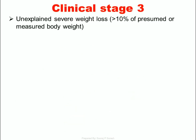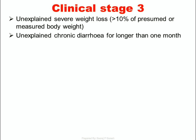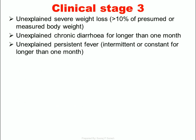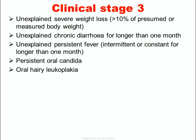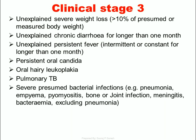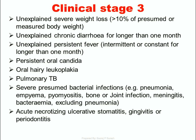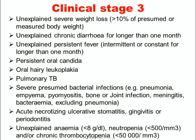Clinical Stage 3: Unexplained severe weight loss (greater than 10% of body weight), unexplained chronic diarrhea for longer than one month, unexplained persistent fever (intermittent or constant) for longer than one month, persistent oral candida, oral hairy leukoplakia, pulmonary TB, severe bacterial infections such as pneumonia, empyema, pyomyositis, bone or joint infection, meningitis, bacteremia, acute necrotizing ulcerative stomatitis, gingivitis or periodontitis, and unexplained anemia, neutropenia, and/or chronic thrombocytopenia.